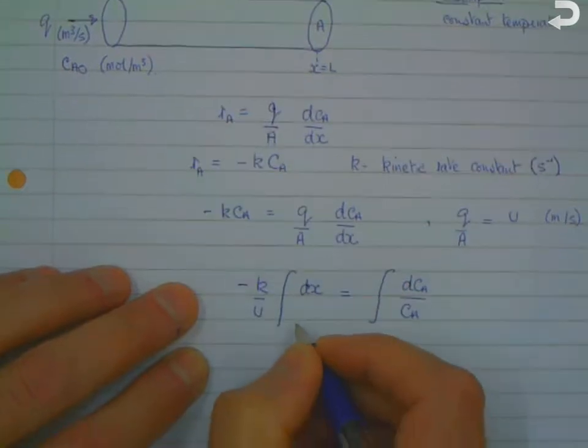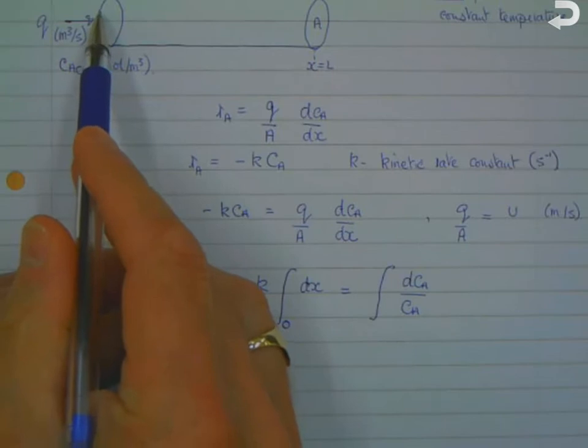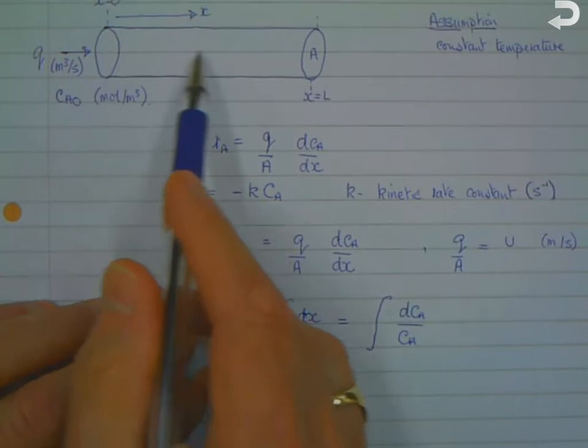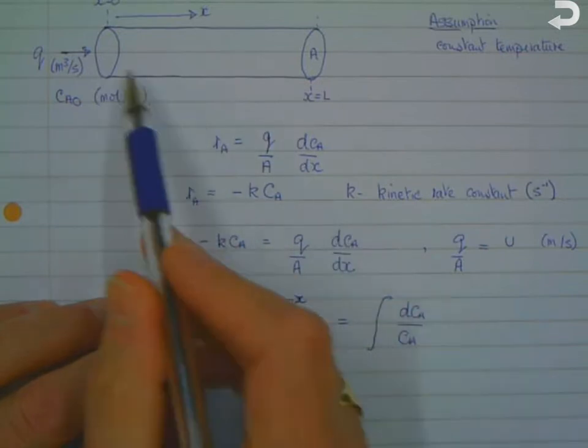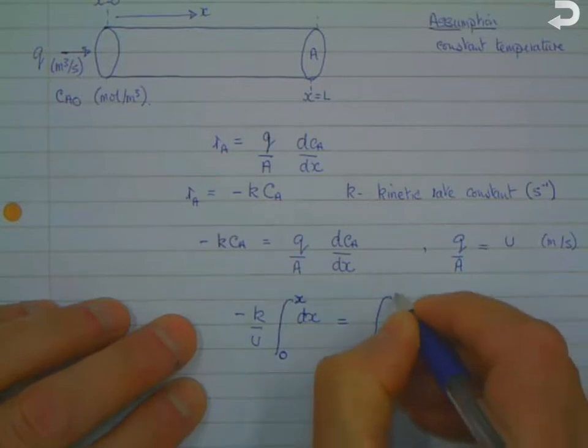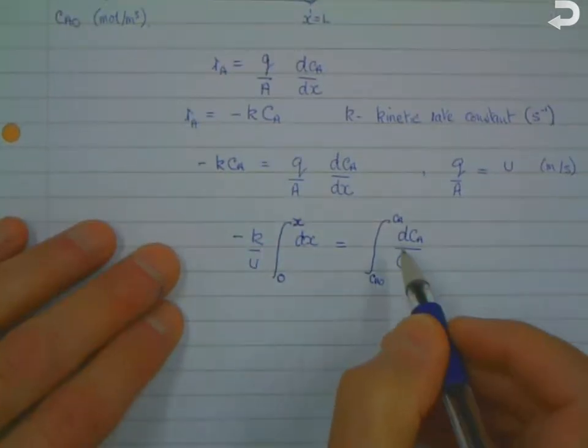And we need some limits on here. So we're going to go to some distance along the reactor x, so the expression we're going to derive will actually be valid at any point along this reactor. And we've got CA0 at the inlet and CA at some given point along the reactor.